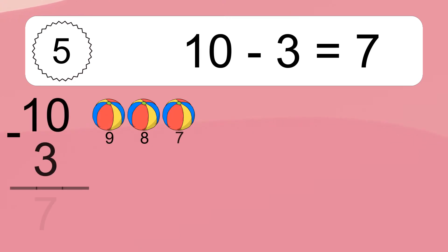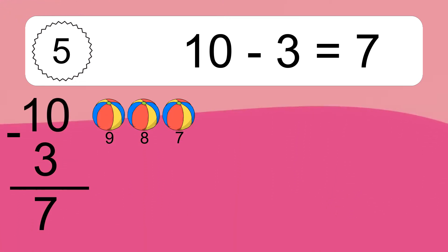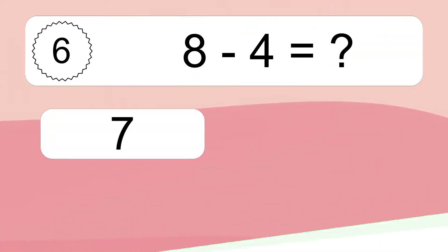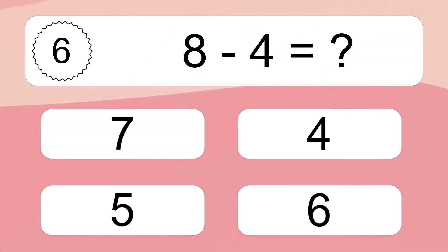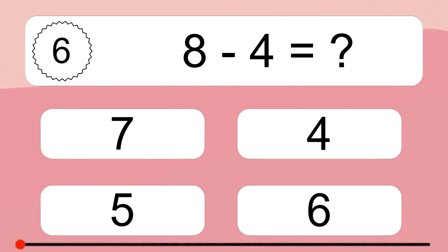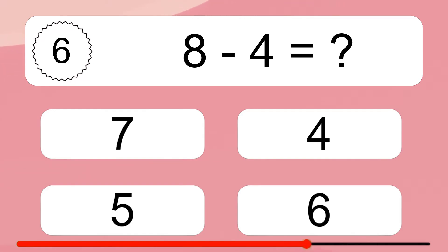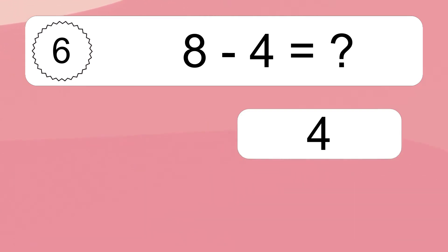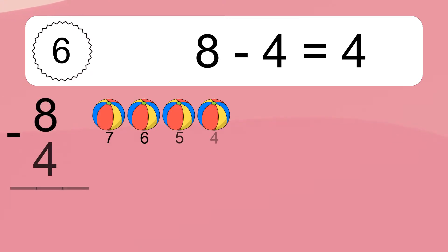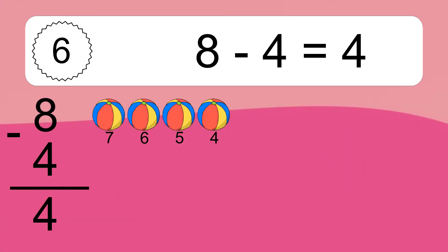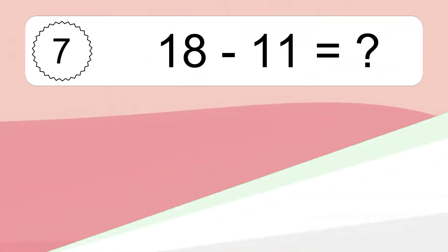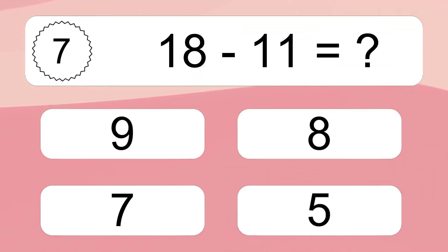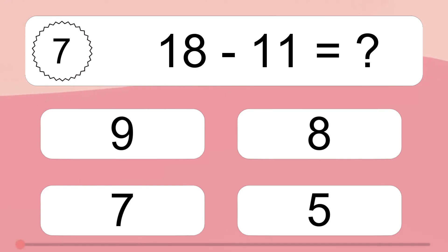10 minus 3 equals what? 10 minus 3 equals 7. Let's count it: 9, 8, 7. 8 minus 4 equals what? 8 minus 4 equals 4. Let's count it: 7, 6, 5, 4.